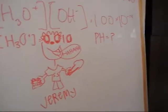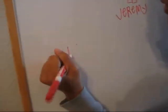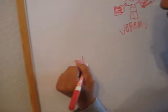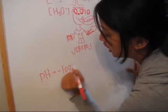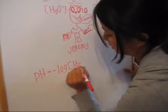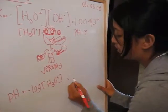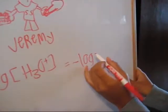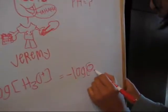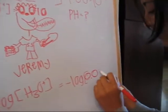And you're looking for the pH. Therefore, the equation to find pH is the negative log of the hydronium concentration. Therefore, it is the negative log of 0.010.